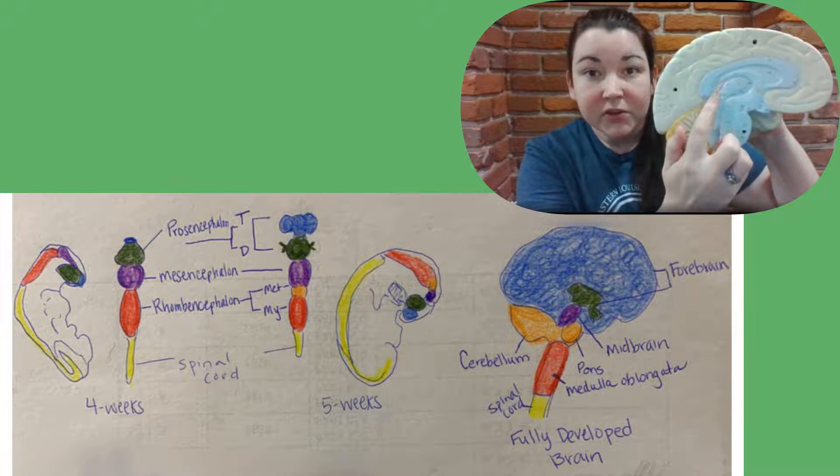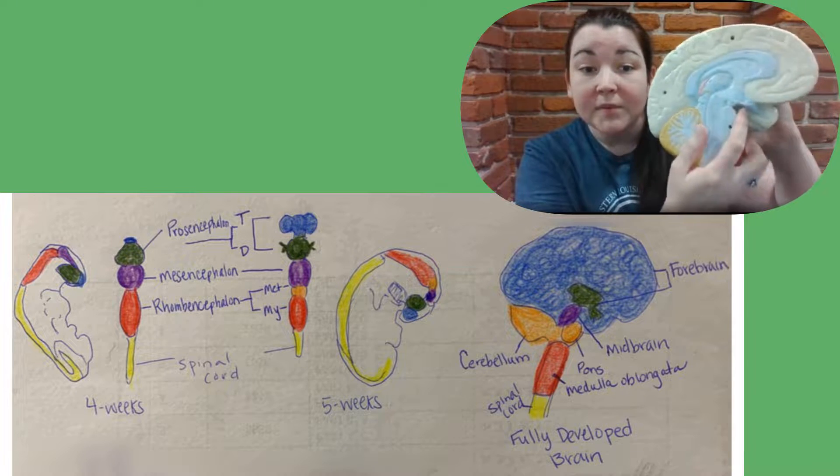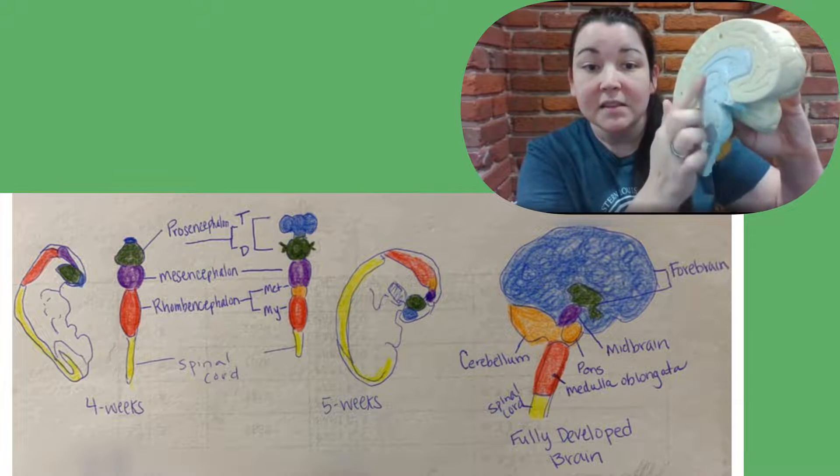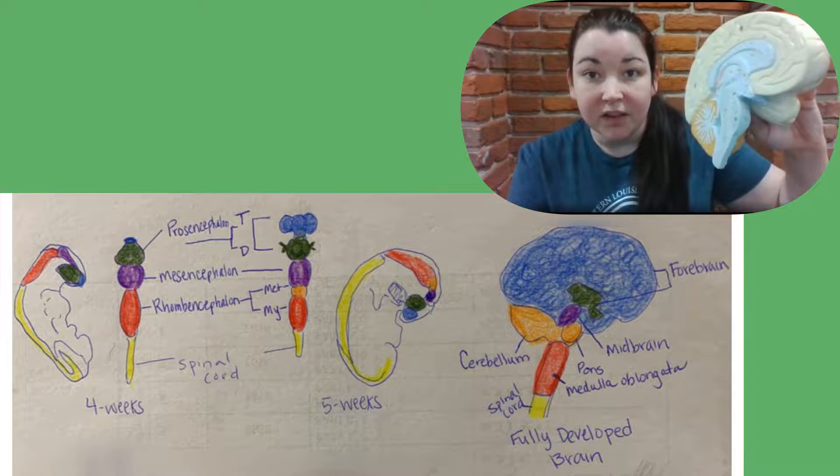In addition to those structures, it's also going to form structures for the eye, such as the retinas, and your optic nerve is right here. So it makes sense that this portion here all comes from the prosencephalon once it subdivides to the diencephalon.